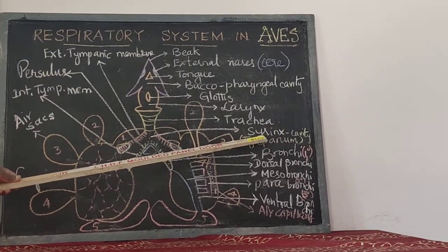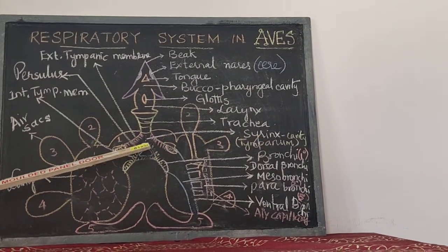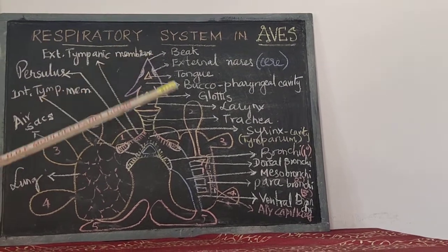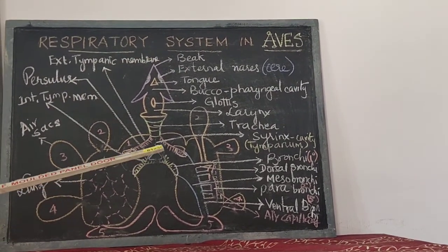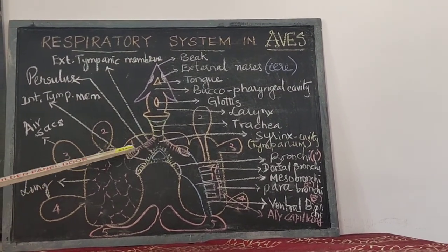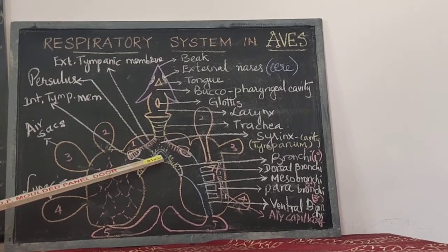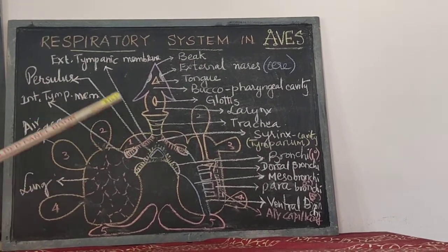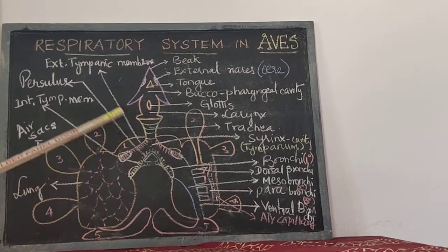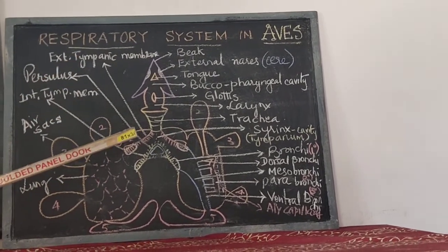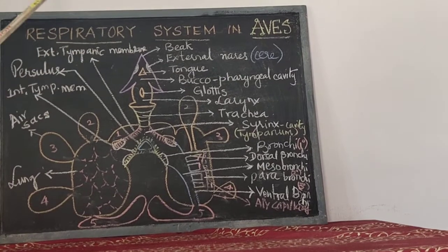Syrinx is a special organ present in the respiratory system of birds, which helps in the production of sound. It contains roughly a triangular shaped bone at the bifurcation called a pessulus, on either lateral side of which is the tubular membranous structure.